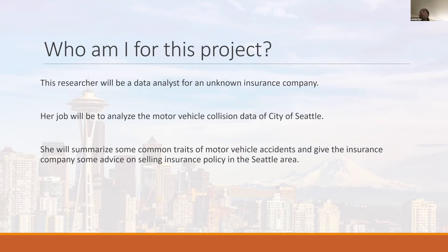The data used for this study can be downloaded from the City of Seattle government website. There are 219,784 records with 40 variables in this dataset. The variables used in this study include: X (latitude), Y (longitude), location, collision type, person count, pedestrian count, bicycle count, person role known count, injuries, serious injuries, fatalities, junction type, interaction, under influence, weather, road condition, light condition, speed, and hit parked car. Records start from October 6th, 2003, but because most attributes are missing for early records, those were removed from the analysis.